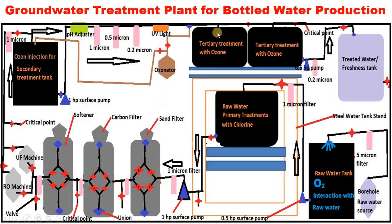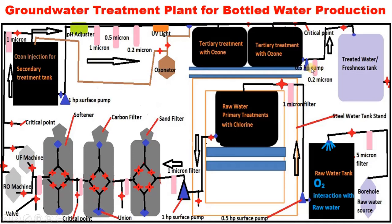We allow 0.2 mg/L concentration of ozone to enter into the tertiary treatment tank — this is what we call the ozonation point. At the critical sampling point here, we check for residual oxidant: the ozone concentration to be bottled should be 0.2 mg/L. This residual ozone helps preserve and protect the water for up to one year. The 0.5 horsepower pump then pushes the water through a 0.2-micron filter and into the treated water or storage tank, from which it is pushed to the production room.